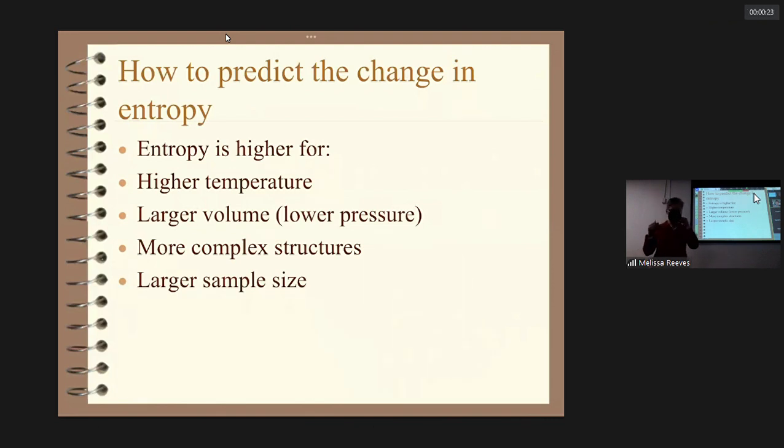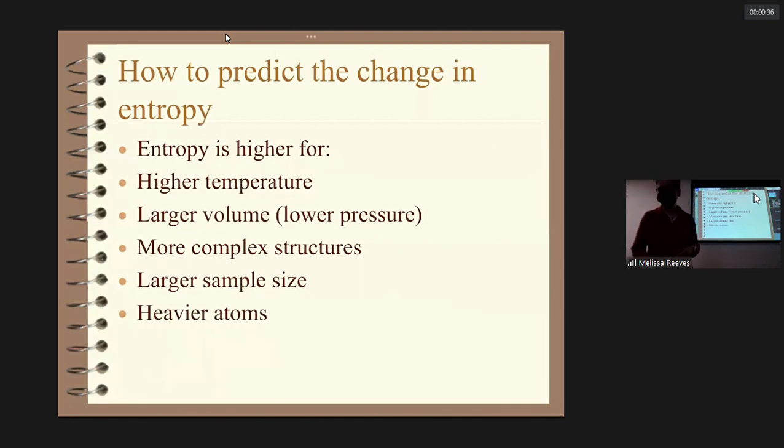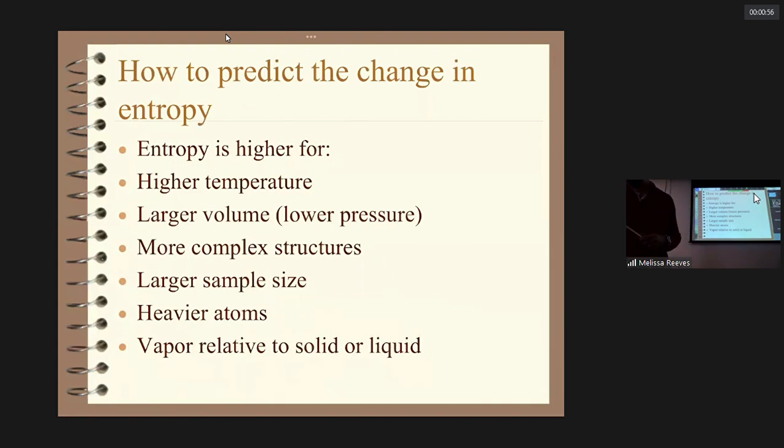It also goes up with amount. We've been doing things in terms of joules per Kelvin per mole, but you don't have to do it per mole. The more stuff you have, the more entropy there is. Heavier atoms have more entropy than light atoms because they have a lot more electrons that can move around. Vapor has higher entropy relative to solids or liquids, and liquids have more entropy relative to solids.